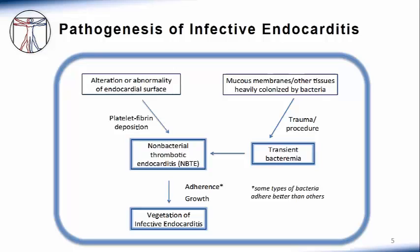Transient bacteremia occurs when a mucosal surface that is heavily colonized with bacteria is traumatized, as occurs with dental, GI, urologic, and other invasive procedures. These bacteria that enter the bloodstream adhere to the nonbacterial thrombotic endocarditis, or thrombus, and lead to vegetative growth, and eventually the infection that we know of as infective endocarditis.